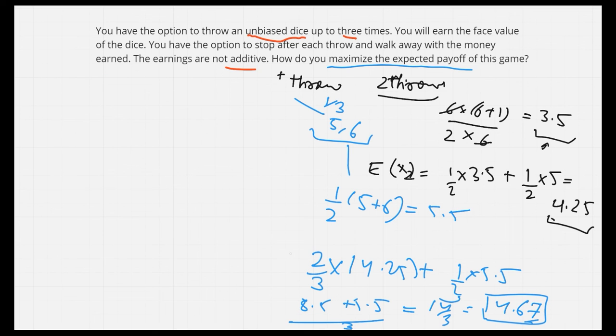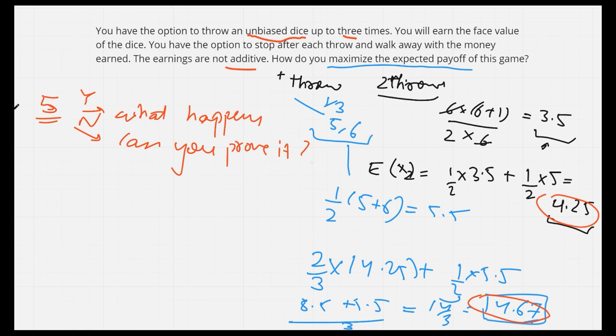The bonus problem is: Will this expected value ever cross 5? If yes, then what happens in that case? If no, can you prove it? We would be increasing the number of dice throws to n. Will it ever cross 5? Let me know the answer in the comments below. Thank you.